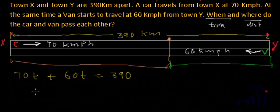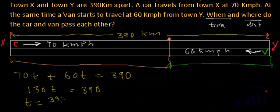So if we solve this equation further, 70 plus 60 will be 130. So 130t will be equal to 390. And if we divide both the sides by 130, t will be equal to 390 divided by 130. So 13 into 3 is 39. So t will be 3.